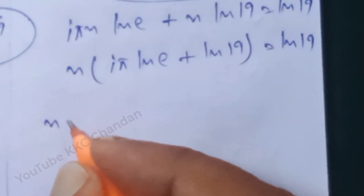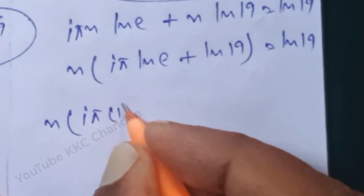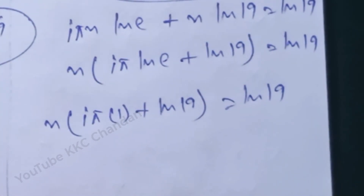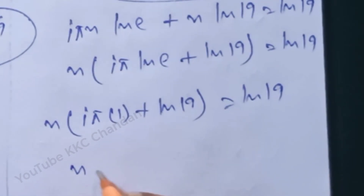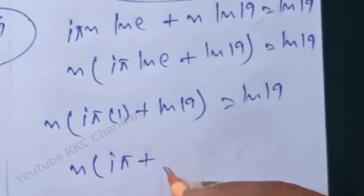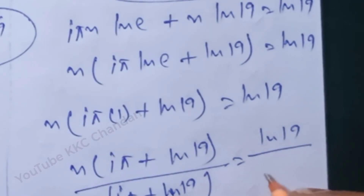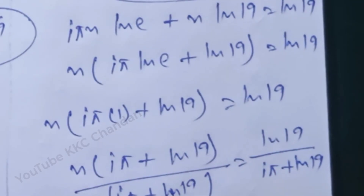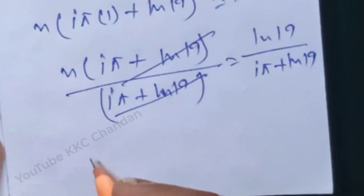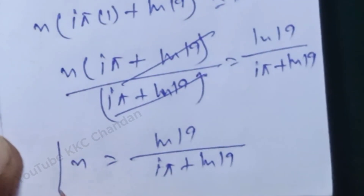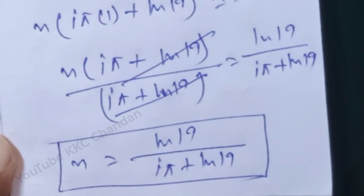So we have n(iπ + ln(19)) = ln(19), since ln(e) = 1. Dividing both sides by (iπ + ln(19)), we get n = ln(19) / (iπ + ln(19)). This is the final value of n.